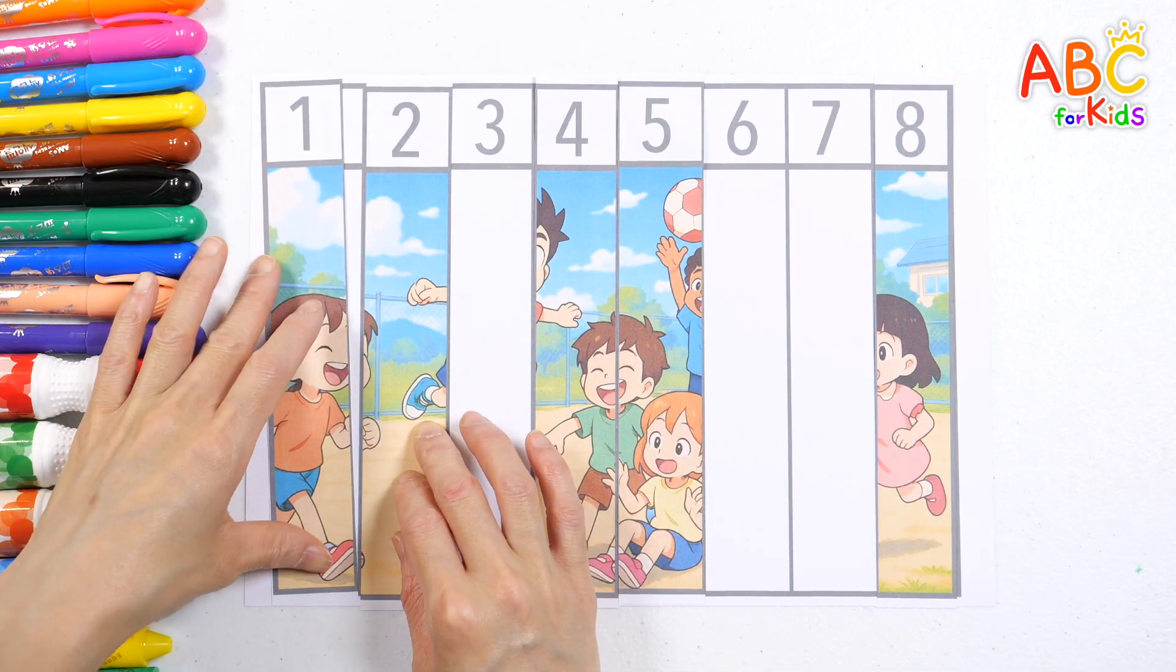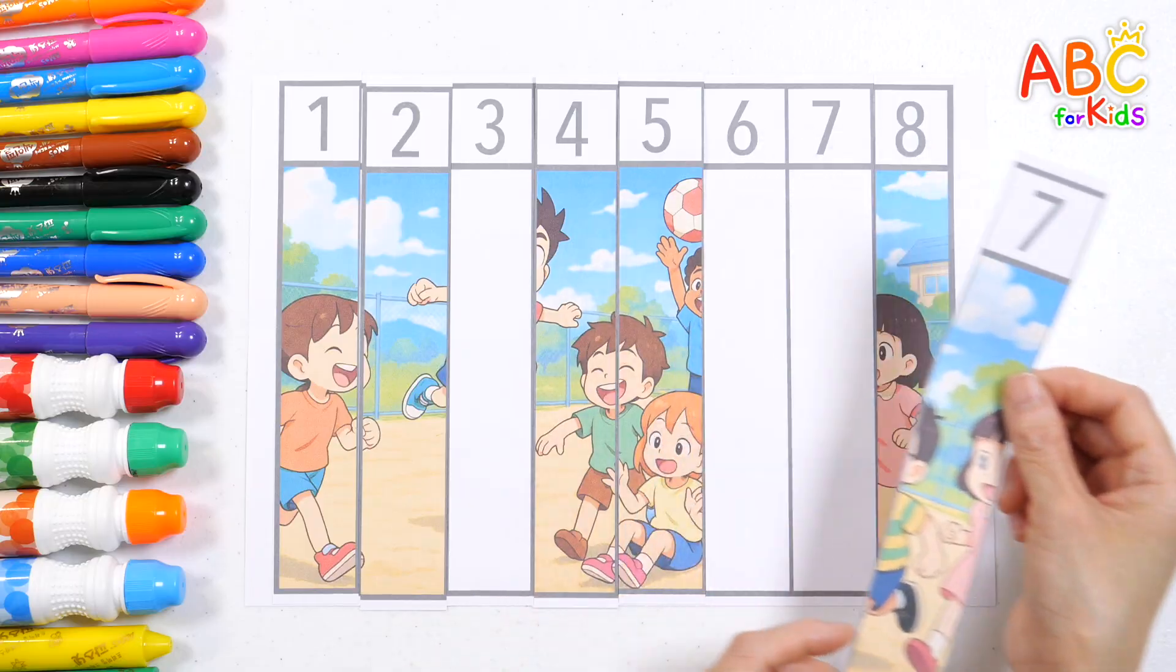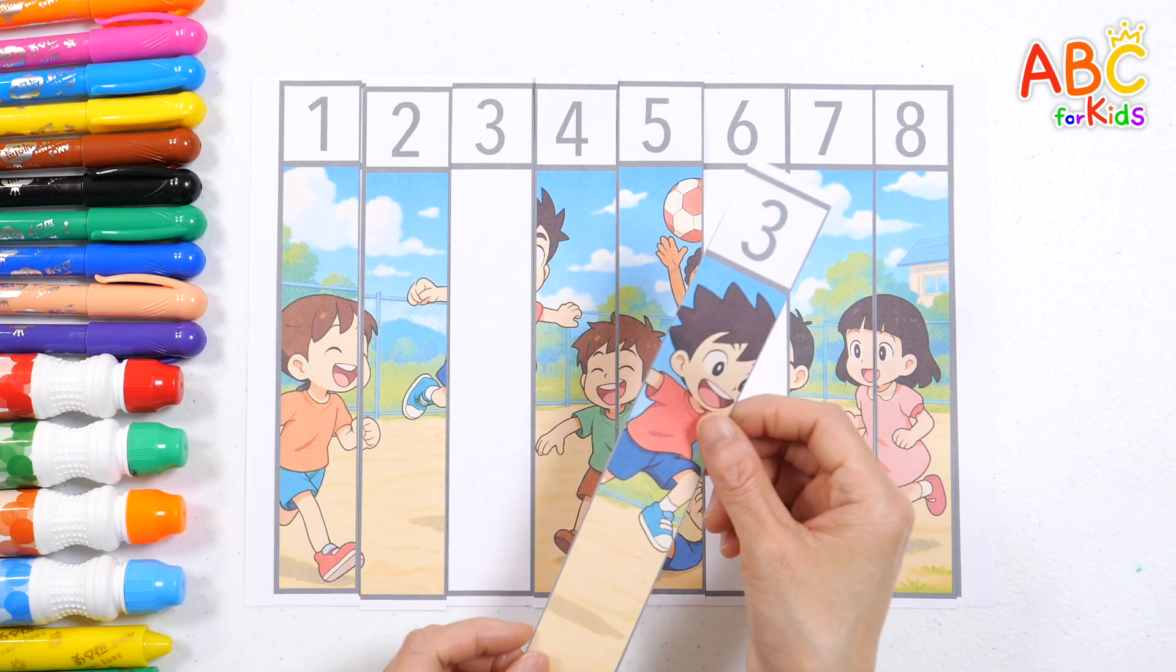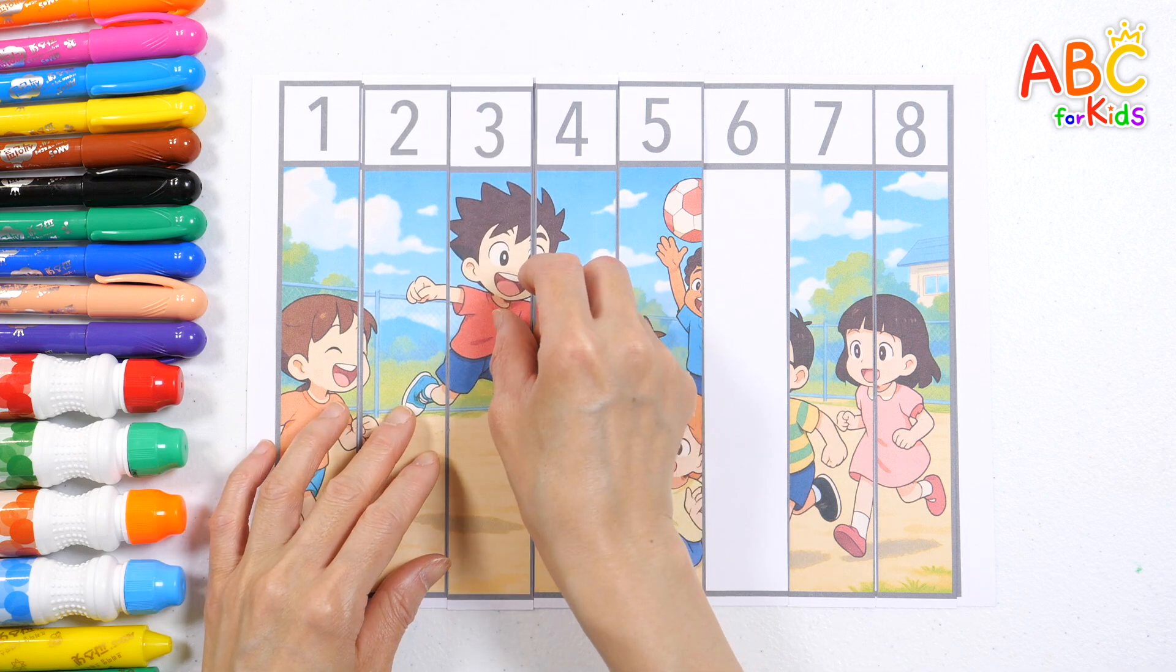M is for mountain, tall and wide. N is for night, with stars as guide. O is for octopus, waving hello. Seven. P is for pirate, ready to go. Three.